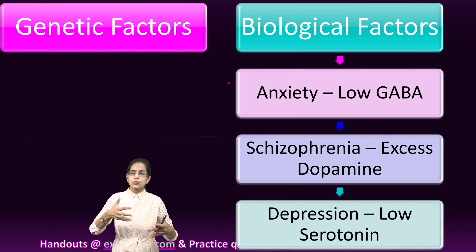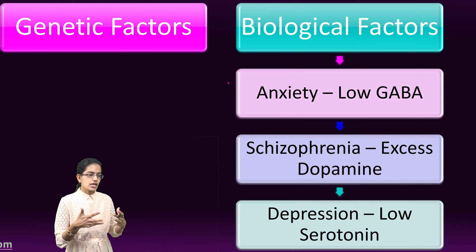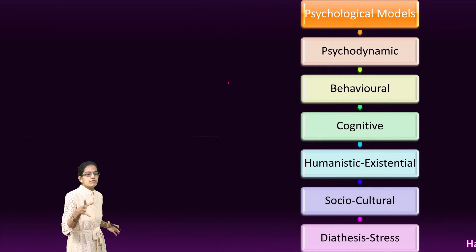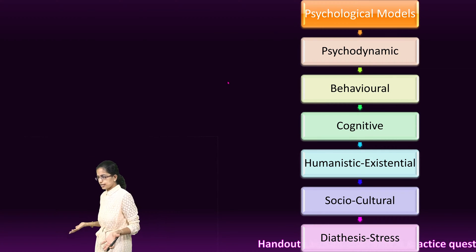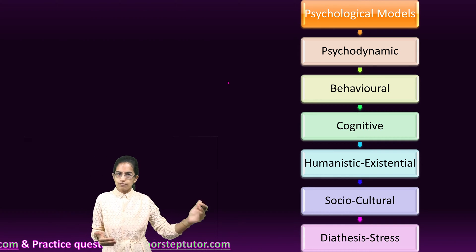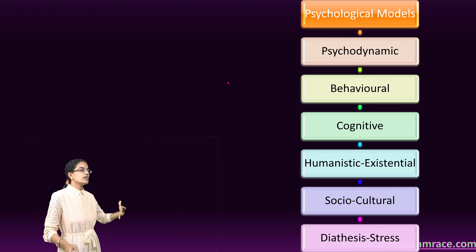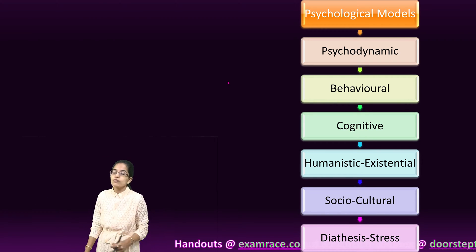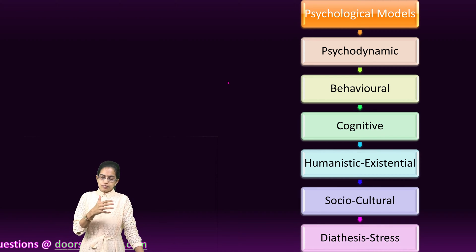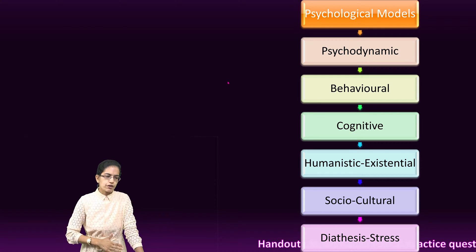Those are some of the ways neurotransmitters play an important role in understanding biological factors and the reason behind abnormality. These are the factors that lead to abnormal behavior. Now, what are the models? We will understand six models today, and based on these models we have six therapies: the psychodynamic model, the behavioral model based on reinforcement and classical and operant conditioning, the cognitive model focusing on irrational beliefs, the humanistic existential therapy model, and the sociocultural and diathesis stress theory.